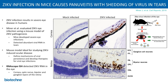Zika virus infection results in severe eye diseases in humans. Miner et al. evaluated Zika viral eye infection using a mouse model of Zika viral pathogenesis. These mice developed severe eye infections and detected abundant viral RNA in their tears, making the mouse model ideal for studying Zika virus-induced ocular disease. RNA Scope in-situ hybridization assay detected the Zika virus in the eye, and you can easily see the presence of the virus in corneal layers, optic nerve, bipolar, and ganglion layers of the retina.